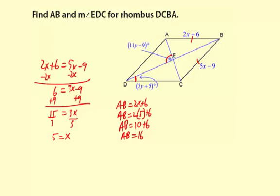We're going to need to use another property of a rhombus: the diagonals are perpendicular. That means we have a right angle here. We can write an equation, 11y minus 9 equals 90 degrees.